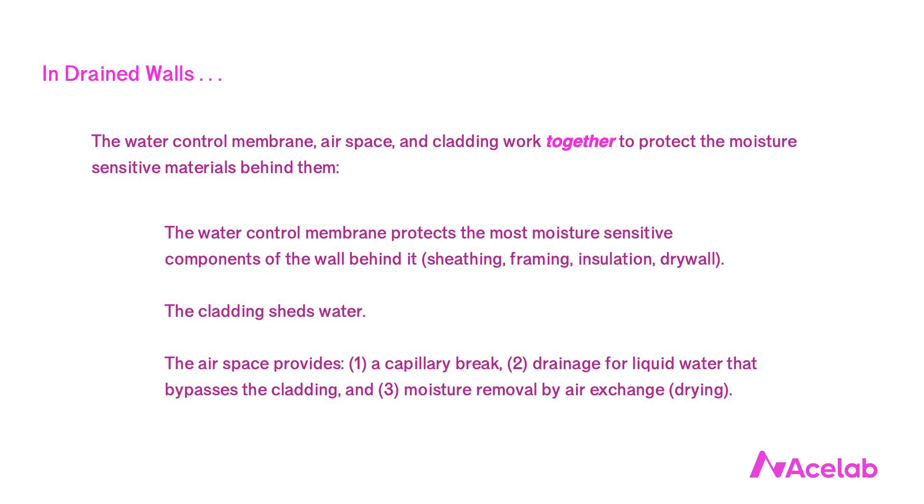The moisture-sensitive parts of the wall behind the water control membrane get wet from small discontinuities in the membrane — from fasteners that hold the cladding in place, minor construction defects, and from interior sources such as people breathing, cooking, and cleaning. When we think of water management in drained walls, we tend to focus on the WRB itself. But these membranes are never completely watertight and have always relied on drainage and ventilation to be effective — not because they are defective or incorrectly installed, but because they have always been designed as part of a system requiring both drainage and ventilation drying.